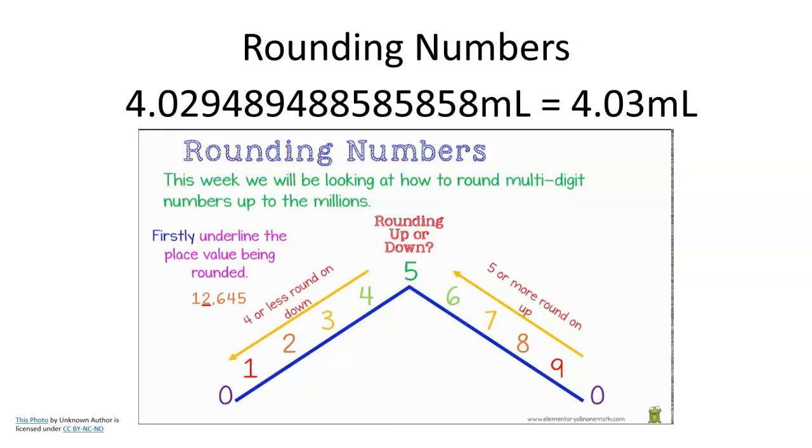So real quick, just rounding numbers, knowing how and when to round your numbers properly is really important. And we're always going to round our milliliters to two decimal places. So if you're measuring in a burette, if you're measuring in a graduated cylinder, anything that's going to be measured in milliliters, we're going to round to two decimal places, just like you see up here. So rounding is not only useful, but it can also help you be more precise in your answer. And precision is the name of the game when it comes to chemistry.